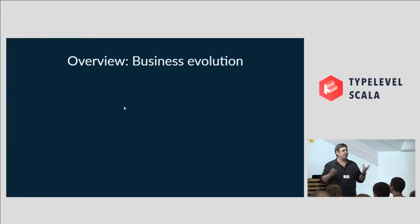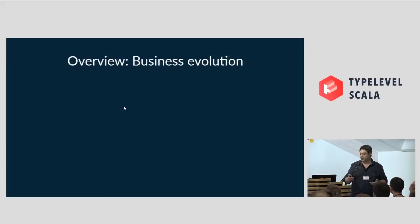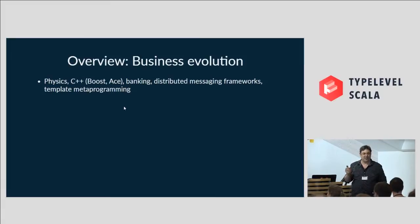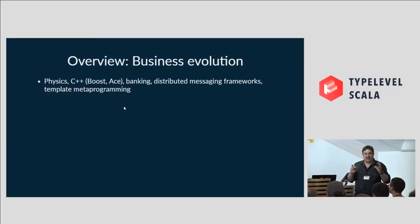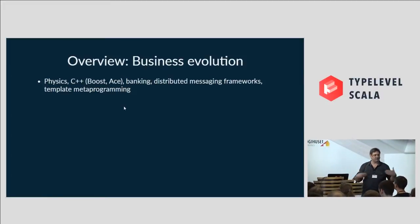Where did this come from from a business viewpoint? We can talk a lot about the maths behind things, the computer science, but this all came about from a business viewpoint — what we do when we go to work, we want to use it to achieve something. My background: initially physics, then many years doing C++ with the Boost framework and the ACE framework. It's all to do with concurrent programming, distributed programming in C++. At the heart, all objects have what they call a reactor, and you build reactive systems. A lot of these things have been around for a while.